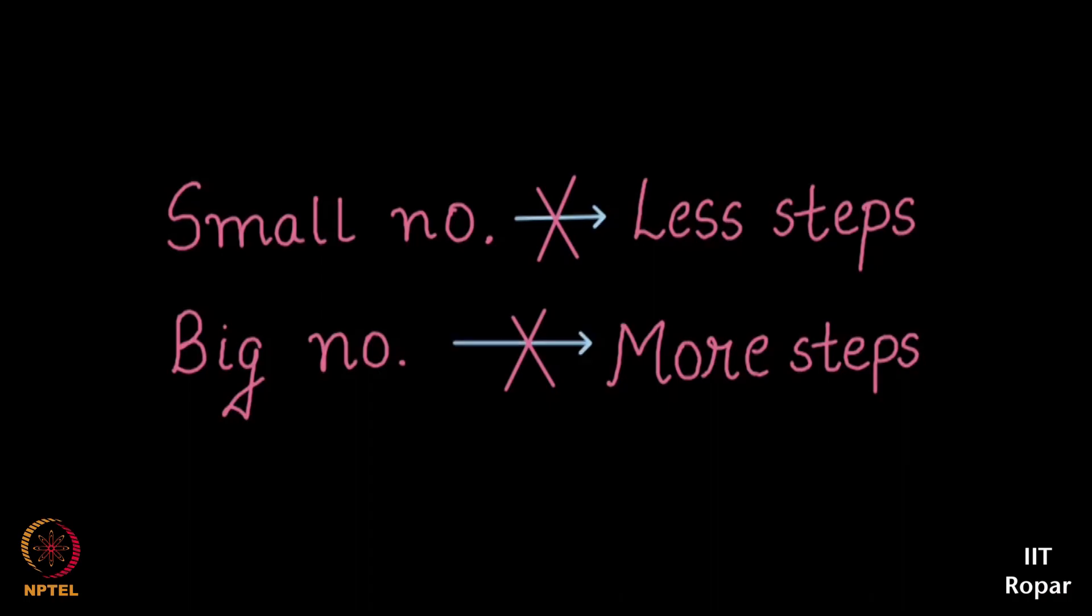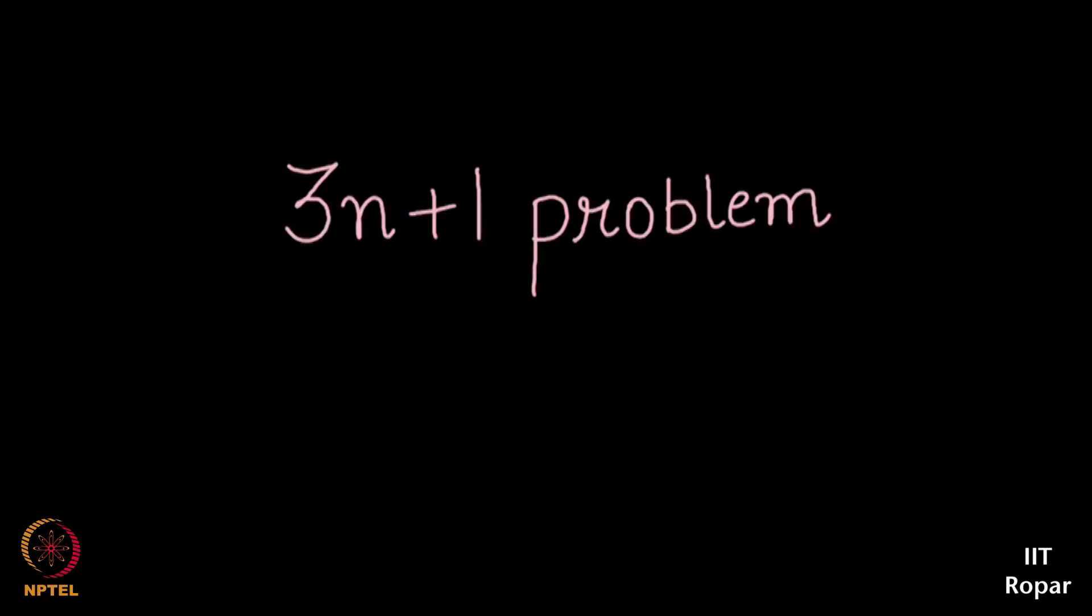Right? This is famously called the 3n plus 1 problem. Google for it, there's a lot of references for this. 3n plus 1 problem also called the Collatz conjecture. In fact we don't even know whether this will ever stop. For some input it might keep going on and on, it may never hit 4, 2, 1, 4, 2, 1. In both the cases you saw it hit 4, 2, 1 but it needn't hit 4, 2, 1, you see? Google for it.